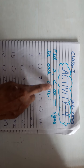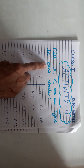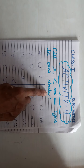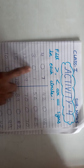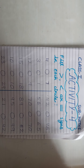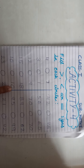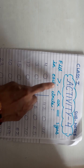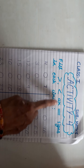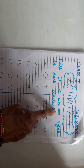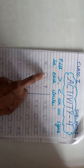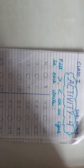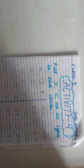Here circles are given and numbers are given. In circles, we have greater than, less than or equal sign — this sign we have to put in. So let's see how we can do it.